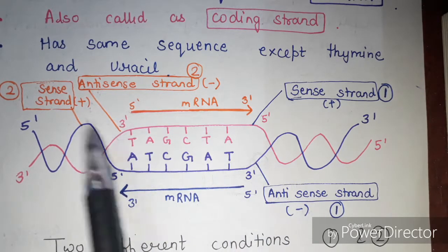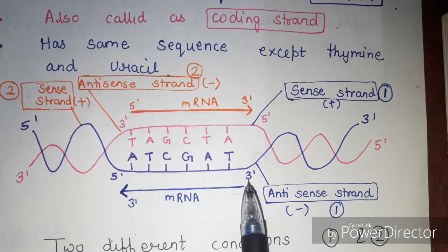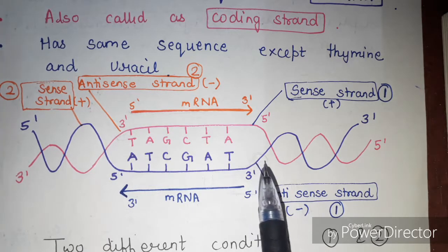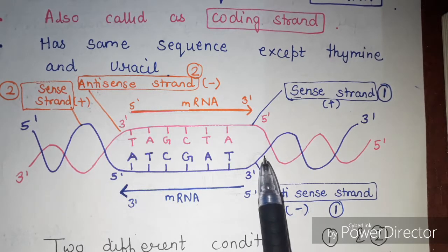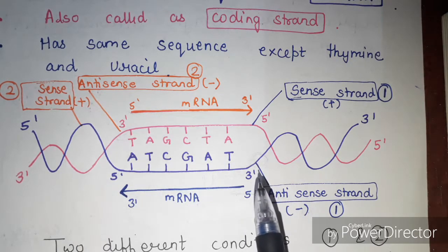It is not always decided which strand is the sense strand and which is the antisense strand. That is why I have shown you two different conditions. The sense and antisense strand depend on the orientation of the promoter. The transcription process starts when RNA polymerase binds to the promoter sequences present on the DNA.